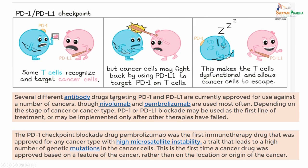There are several different antibody drugs that target the PD-1 and the PD-L1, and they are currently approved for use against a number of cancers. Though nivolumab and pembrolizumab are used most often - they are very common drugs used in immunotherapy - and they are very prominent in immunotherapy trials now. Depending on the stage of the cancer or the cancer type, the PD-1 and PD-L1 blockade may be used as the first line of treatment or may be implemented only after other therapies have failed.